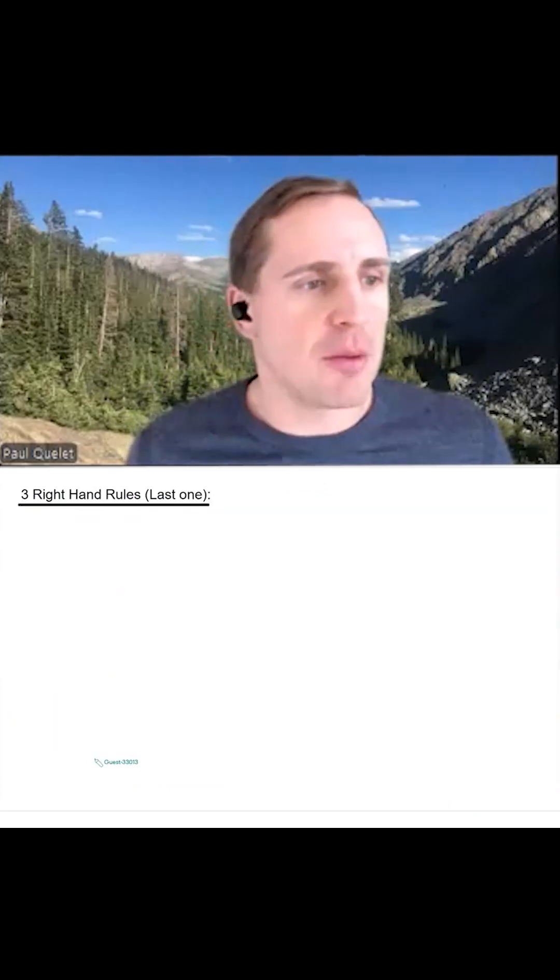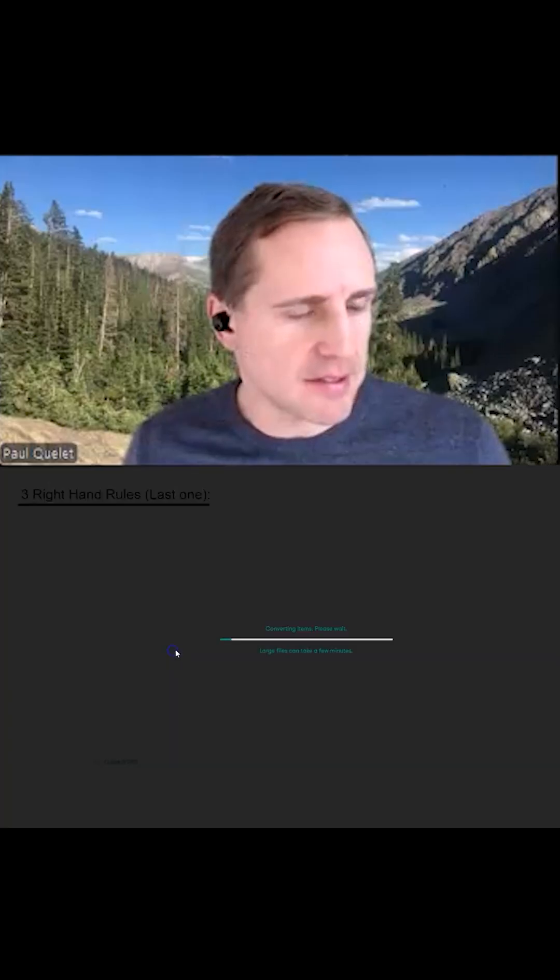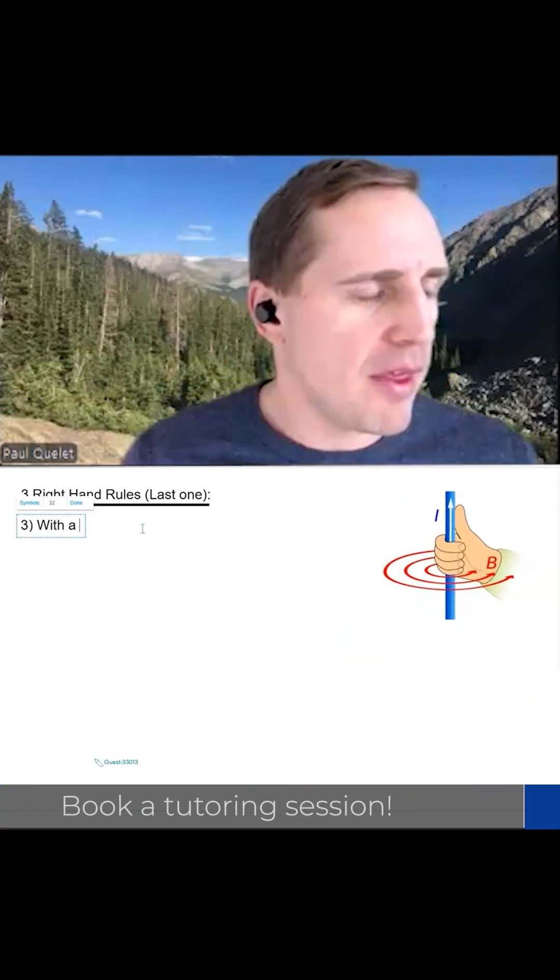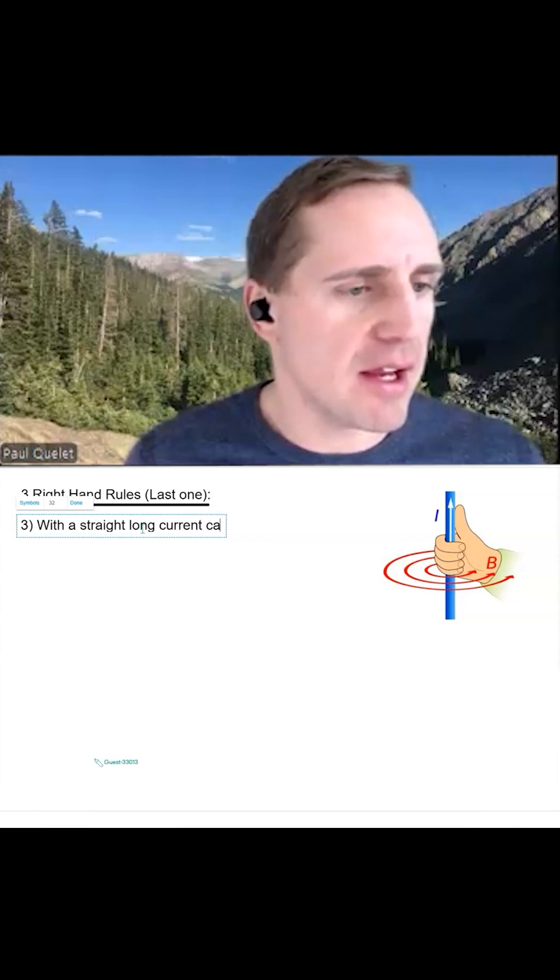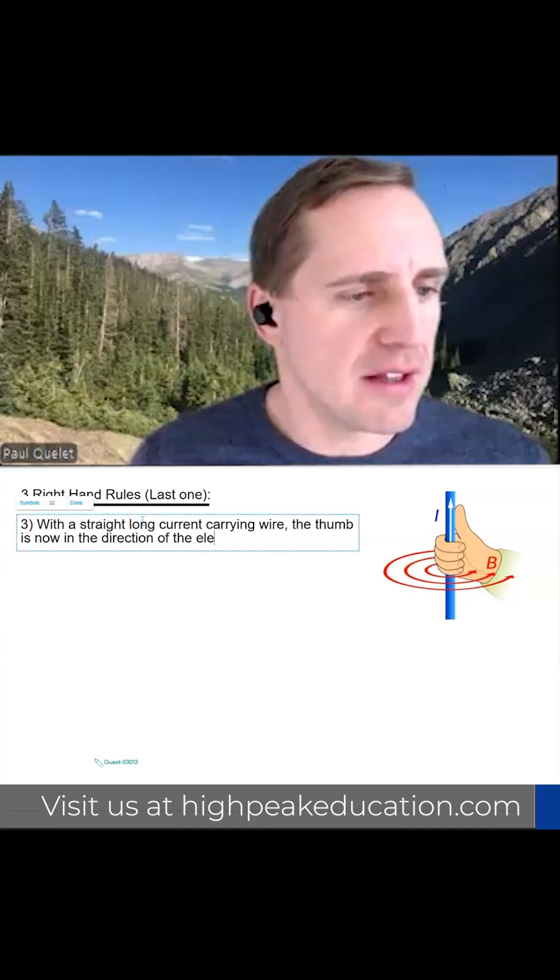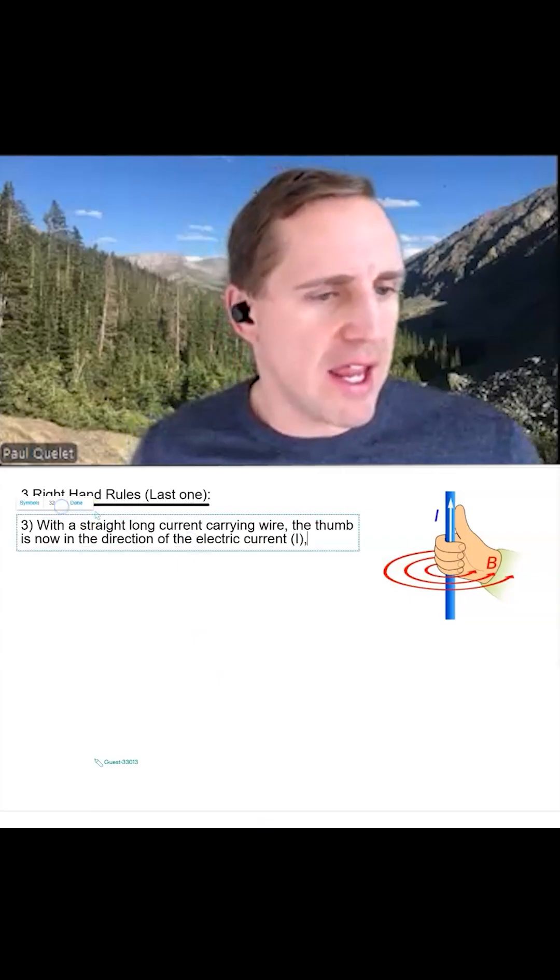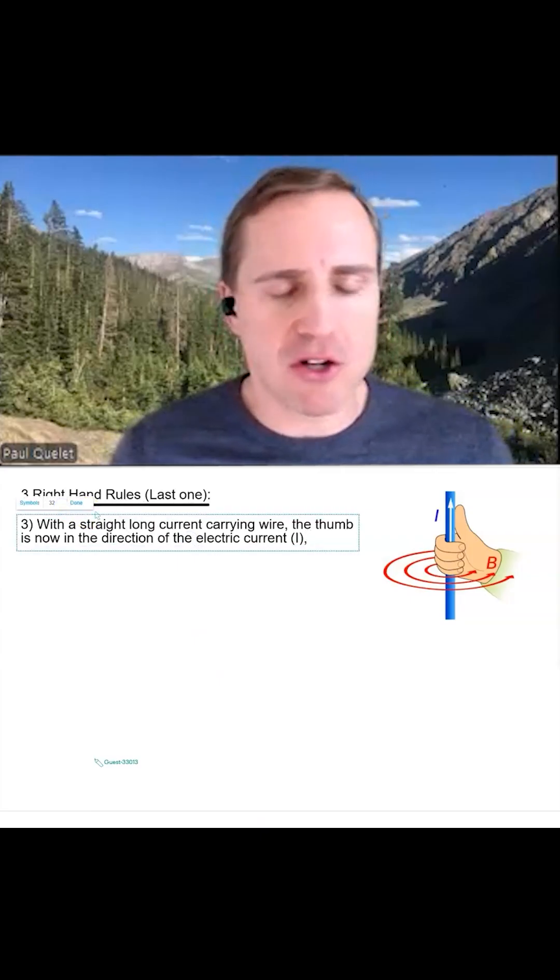You see that the last one is going to be if you have a straight long piece of wire. Consider this image with a straight long current carrying wire. The thumb is now in the direction of the electric current, that's I, and then the right hand rule fingers wrap in the direction of the magnetic field.